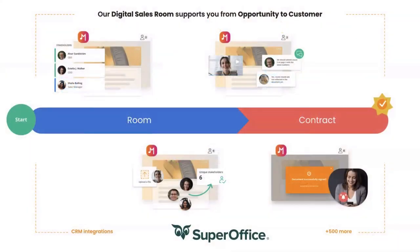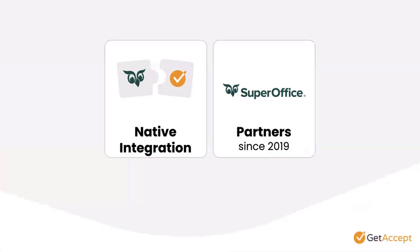Our digital sales room supports you with everything from an open opportunity to a closed customer. Every piece of content shared along the way — all the proposals that are sent and the contracts that are signed — will be in the same place. And of course, it's integrated in SuperOffice. Our integration is a native-built integration, and we've also been SuperOffice partners since 2019. SuperOffice themselves use GetAccept.